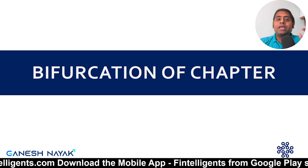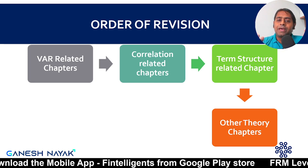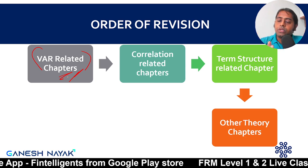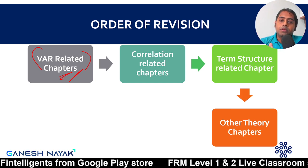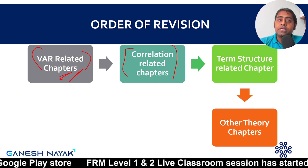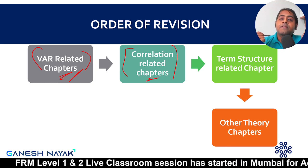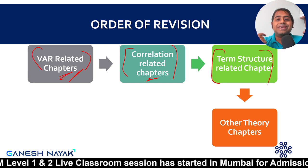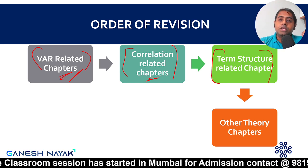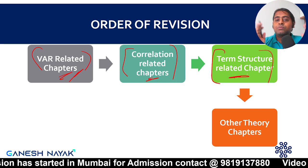For the bifurcation of chapters, when I look at the entire Market Risk book, I see there are around four chapters covering parametric approach, non-parametric approach, VAR mapping and related topics — these can be combined into a VAR-related bucket and should be done together. There are also certain chapters specifically related to correlation, discussing how correlation behaves from a regulatory perspective, and those should be read in one go.